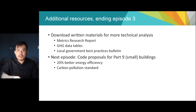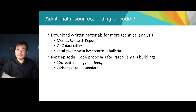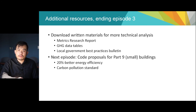As we conclude this episode, I know some people may want more detail than this presentation provides. There are written materials which contain more technical and costing analysis, including the 2022 Update to the Metrics Research Report, GHG Data Tables which show examples of how large buildings can meet the proposed GHG requirements, and a Local Government Best Practices Bulletin written in collaboration with the Step Code Peer Network. Modeling rule sets, which are currently in development, will provide the granular detail necessary for design professionals to implement any potential standard. The next episode will focus on the BC Building Code proposals for improved energy efficiency and the Carbon Pollution Standard for Part 9 or small buildings. See you there.